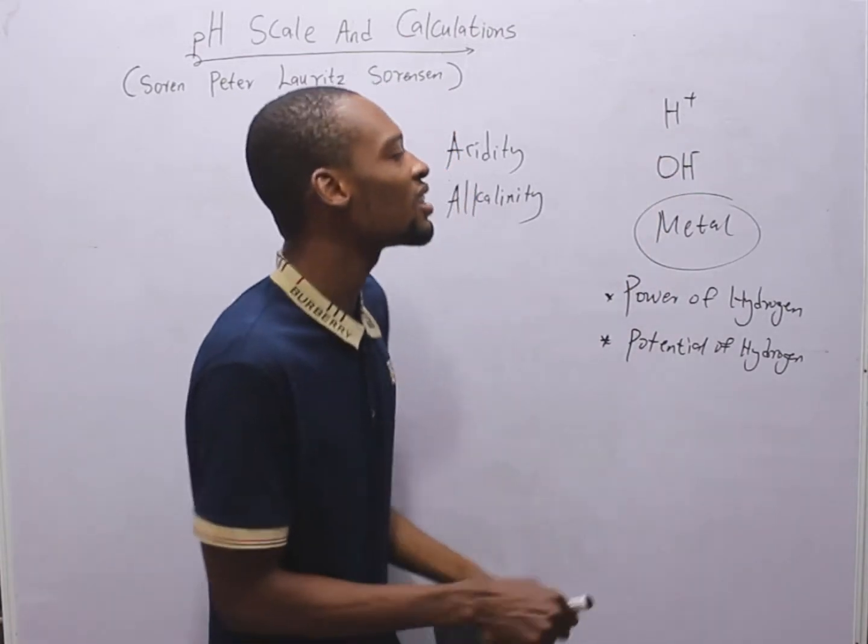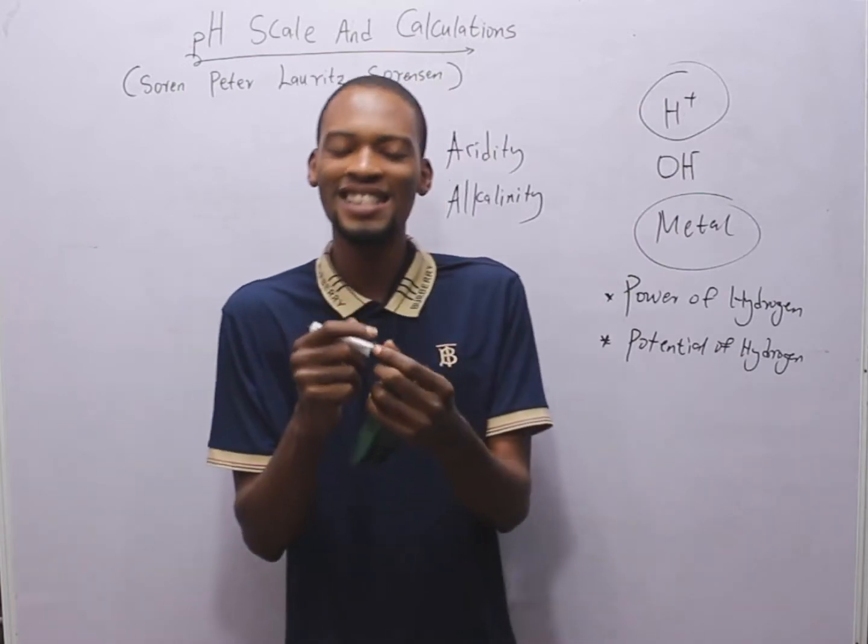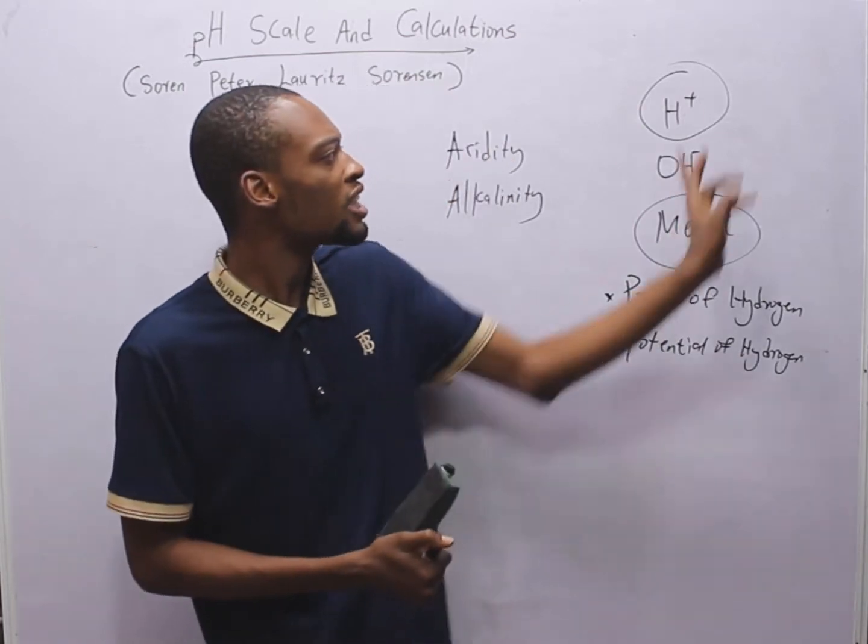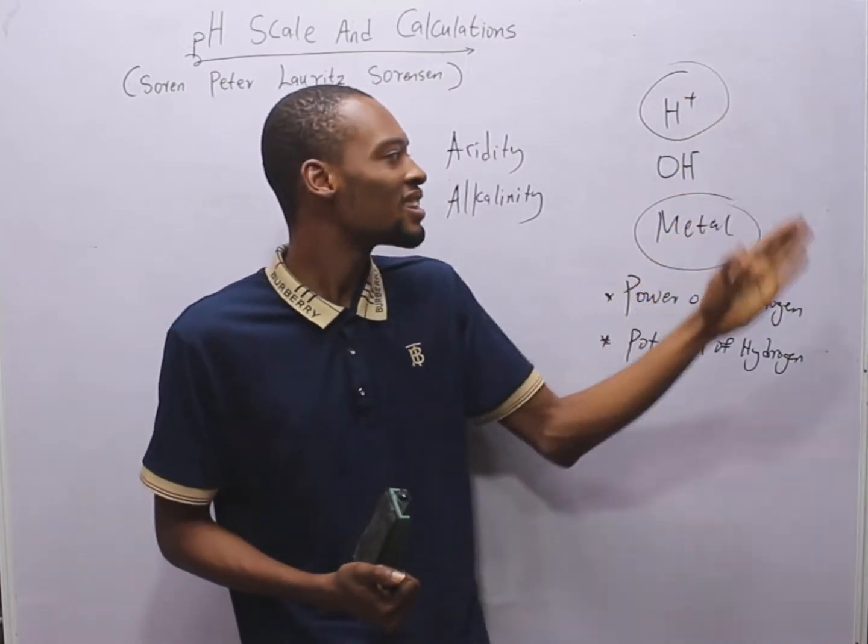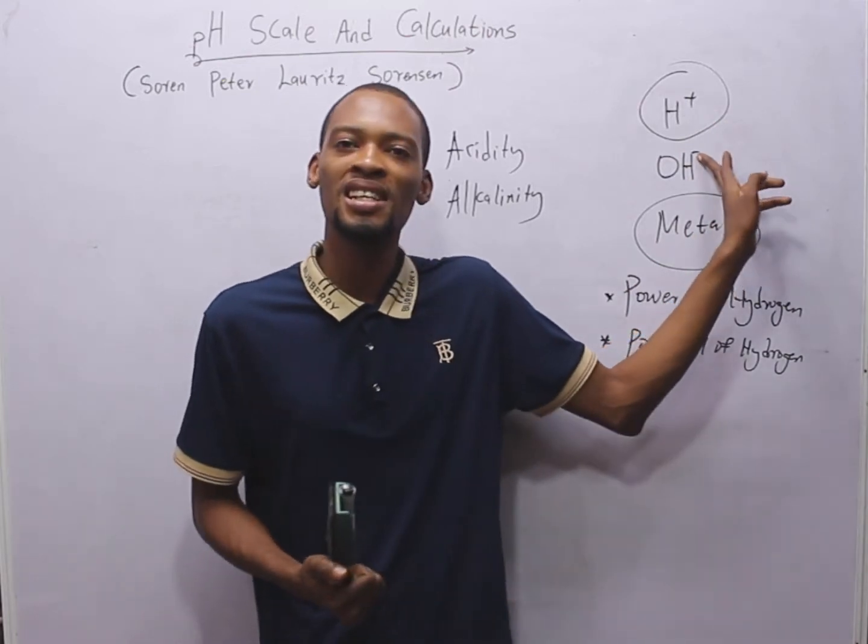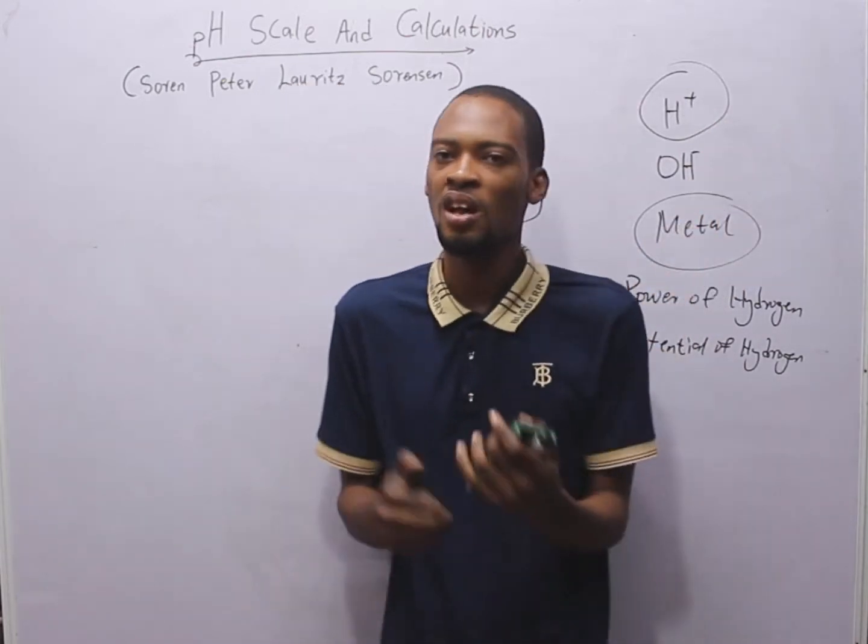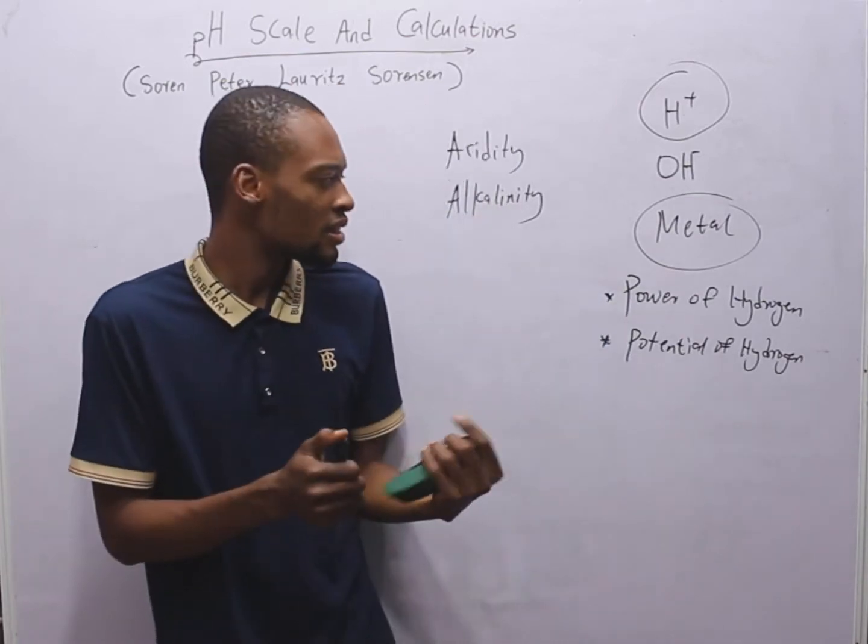It means that pH is an atom that possesses electric charge. So H plus is positively charged, it is an ion. OH is negative, it possesses a charge, it is an ion. That is what ion is about.